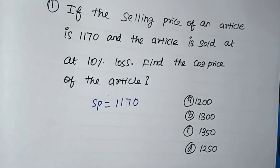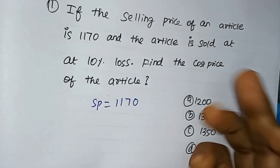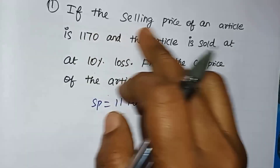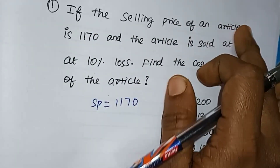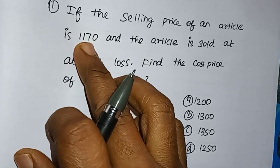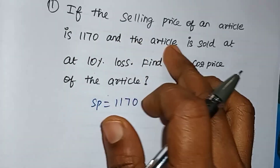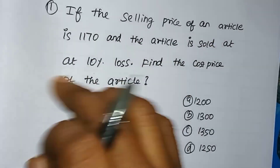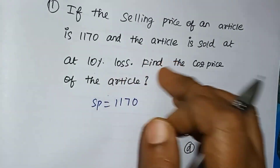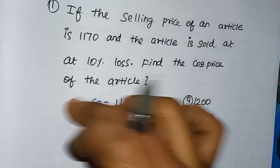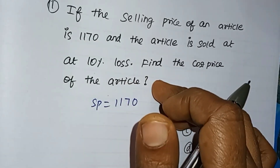Aptitude important questions. If the selling price of an article is 1170 and the article is sold at 10% loss, find the cost price of the article.